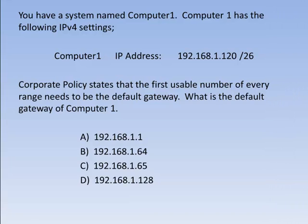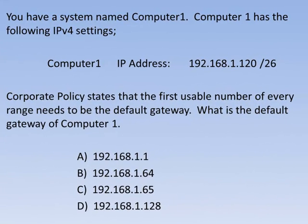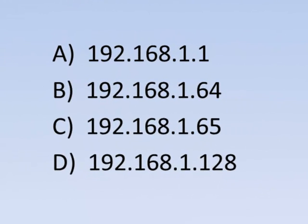In this video, I will show you how to figure out subnet ranging. Let's say you had the following question: you have a system named Computer1. Computer1 has the following IPv4 settings. The IP address for Computer1 is 192.168.1.120/26. Corporate policy states that the first usable number of every range needs to be the default gateway. What's the default gateway going to be for Computer1? The four options are: A) 192.168.1.1, B) 192.168.1.64, C) 192.168.1.65, or D) 192.168.1.128.